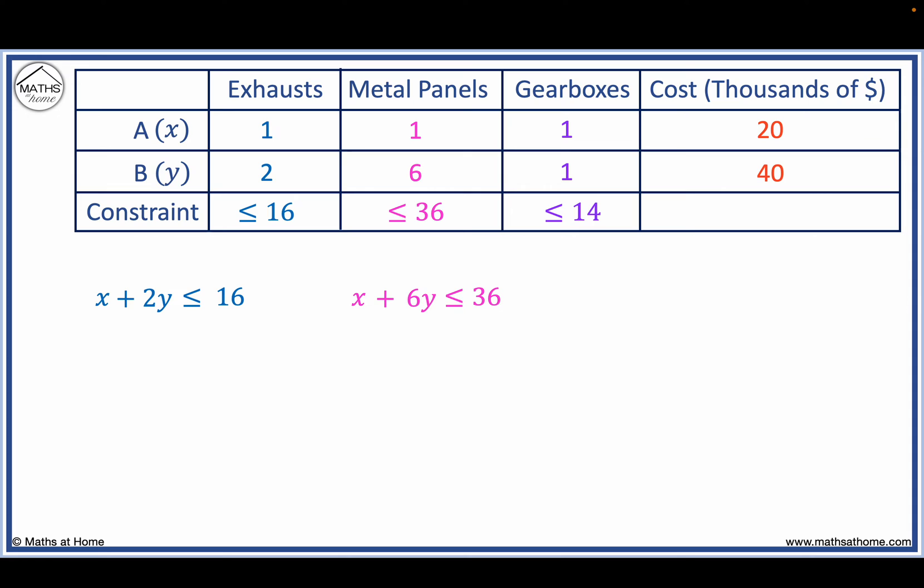And for gearboxes, x plus y is less than or equal to 14. The objective function to maximise cost is 20x plus 40y.